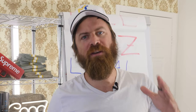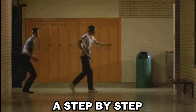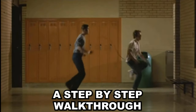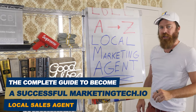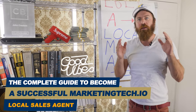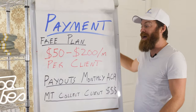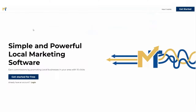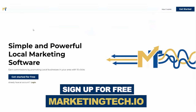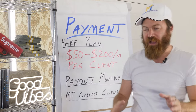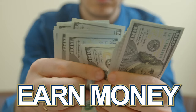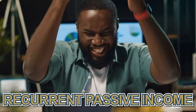John Crestani here and I have a different sort of video for you today. I'm going to walk you through literally step by step. We're going to be out in the field, on my computer, all over the place — A to Z — how to be a local marketing agent and start earning $50 to $200 per client commissions. You can sign up for my software at marketingtech.io. It is free to sign up for and start earning money with, and I'm going to show you exactly how to do this.